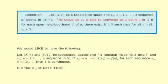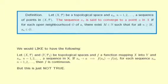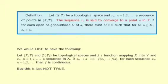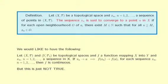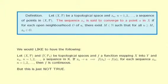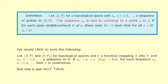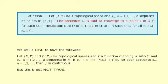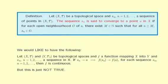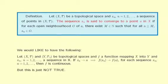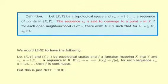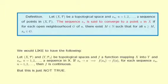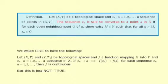So in the general topological space X_τ, the sequence X_n converges to a point A in X if and only if for each open neighbourhood O of A there exists a positive integer M such that for any N greater than or equal to M, X_n is in O.